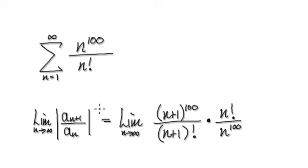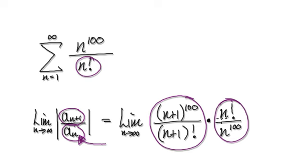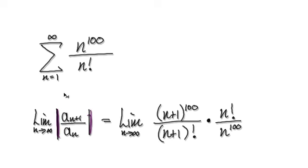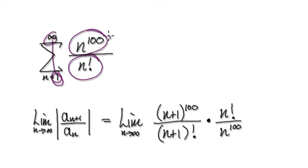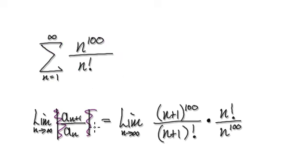To use the ratio test, you need to compute this value here. So your a_n, a_{n+1}, which will be this, and then divided by — that means you multiply by the reciprocal of this. So here you've got n factorial at the bottom, here you've got n factorial at the top. We want the absolute value, but from 1 to infinity this will always be positive, making the whole thing always positive, so we can ignore the absolute sign.